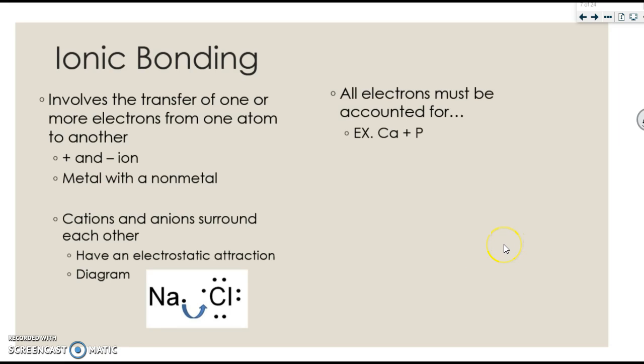Let's talk about ionic bonding. Ionic bonding involves a transfer of one or more electrons from one atom to another. It is a positive and a negative ion, so usually it's a metal with a nonmetal. The cations and anions surround each other. They have an electrostatic attraction. Opposites attract.